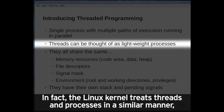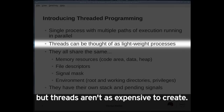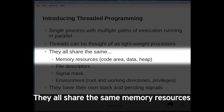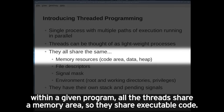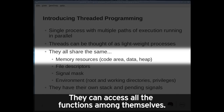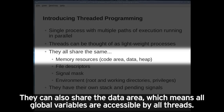The Linux kernel treats threads and processes in a similar manner, but threads aren't as expensive to create. They all share the same memory resources within a given program. All the threads share a memory area, so they share executable code — they can access all the functions among themselves. They can also share the data area, which means all global variables are accessible by all threads.